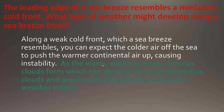Next: the leading edge of a sea breeze resembles a miniature cold front. What type of weather might develop along a sea breeze front? This is basically asking what type of weather occurs along a cold front, so we can think of this as a weak cold front. Cold air from the sea blows inland and pushes the warm continental air up. Because it's by the sea, it's moist air. So that warm moist air rises, causing cumulus clouds to form, which can develop into cumulonimbus clouds and produce thunderstorms, hail, winds, and the potential for tornadoes.